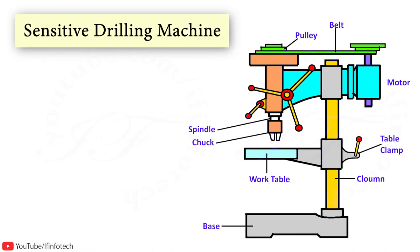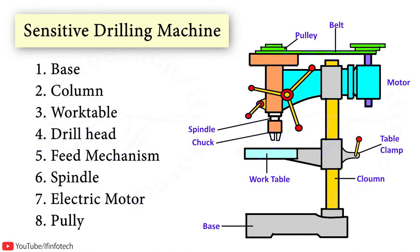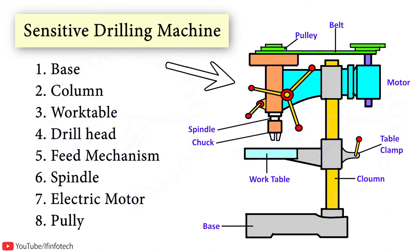The first type is the Sensitive drilling machine, which consists of a base, column, work table, drill head, feed mechanism, spindle, electrical motor, and pulley. The Sensitive drilling machine has only a hand feed mechanism for feeding the tool into the workpiece. This enables the operator to feel how the drill is cutting, and accordingly he can control the down feed pressure.